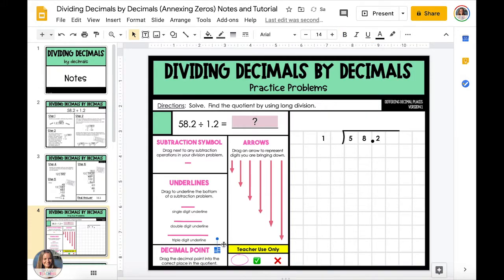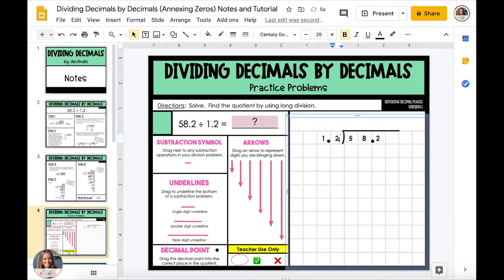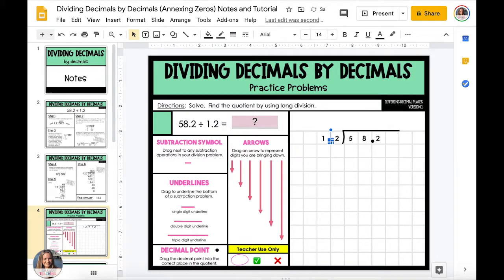Again we want to make sure that our divisor is a whole number. So to make 1 and 2 tenths into a whole number we need to increase it 10 times or move the decimal point to the right once. Whatever we do to our divisor we need to also do to our dividend, so 58 and 2 tenths will increase 10 times to 582.